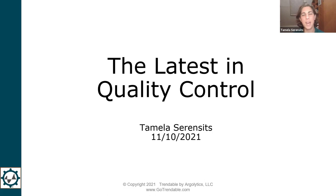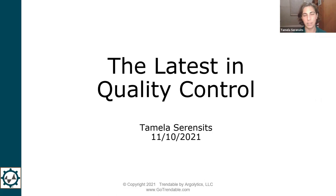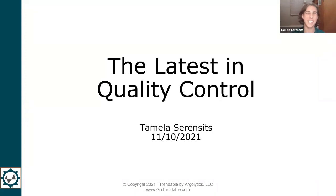I've titled this 'The Latest in Quality Control,' but we're going to focus on statistical process control tonight. That's actually something that's been around for almost 100 years. Walter Shewhart, back in the 1920s at Bell Labs, was the first to put out papers talking about controlling processes statistically. His seminal paper on control charting was put out in 1924, so we're coming up on the 100th anniversary.